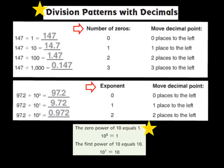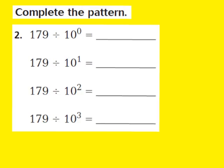Now let's put this knowledge into practice and take a look at question number two. Our job is to complete the pattern. What I notice is that each divisor has exponents: the 0 power of 10, the first power of 10, the second power of 10, and the third power of 10. For the first part, I have 179 divided by the 0 power of 10. My exponent is 0, so I don't need to move my decimal at all. So 179 divided by 10⁰ equals 179.